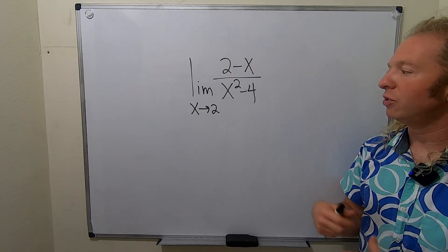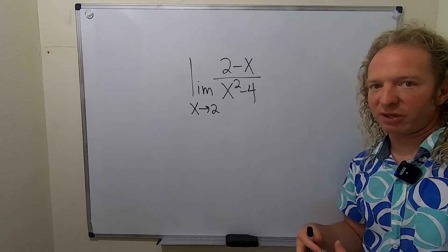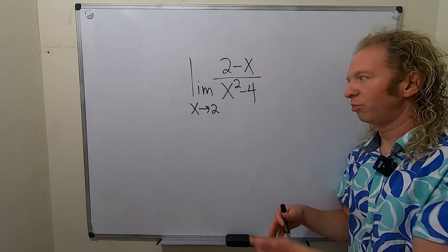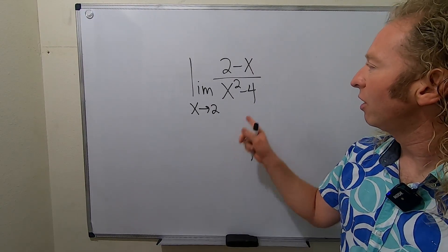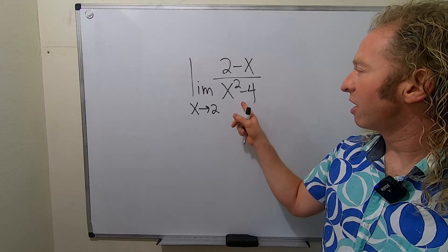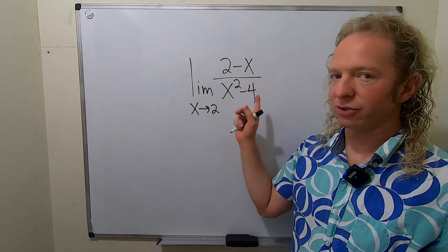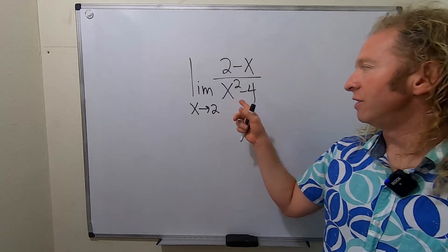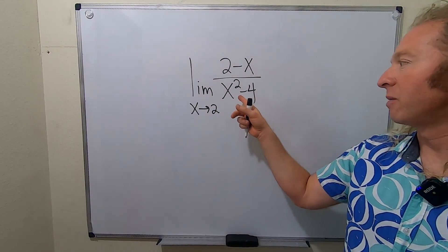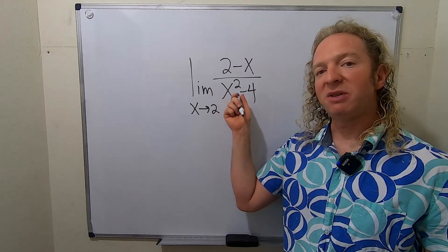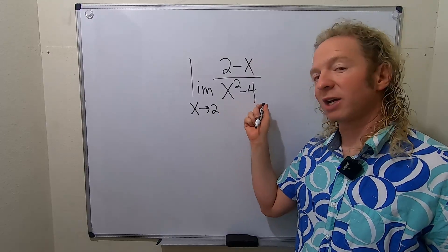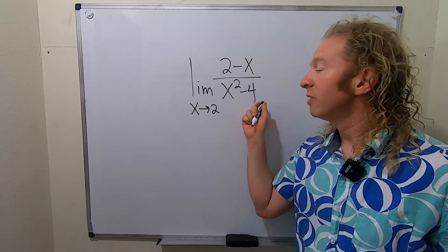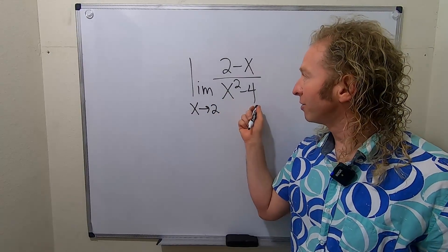So you want to do something in order to plug the number in and evaluate the limit. What can you do? Well, factoring is an obvious choice. The denominator — the bottom piece — is going to be the difference of squares: x minus 2, times x plus 2. So that will factor.